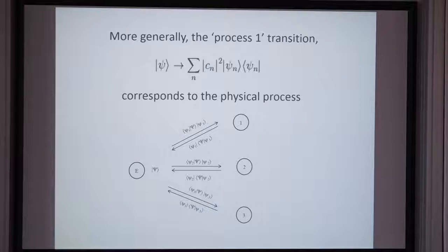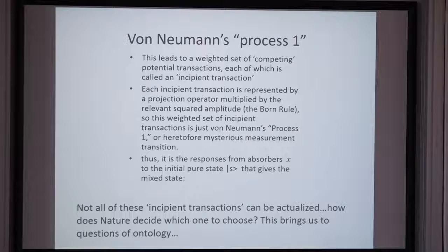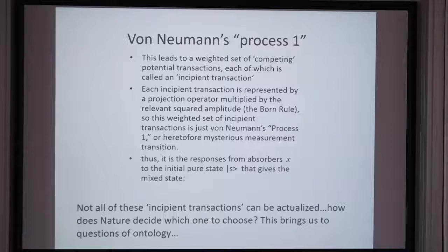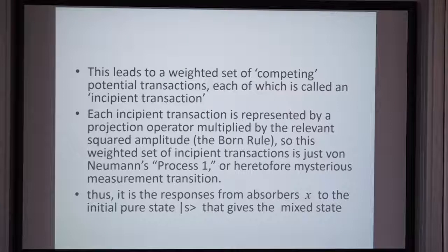One of these outcomes is actualized, and at that point the real quantum of energy will go from the emitter to whichever absorbing system wins that lottery and actualizes that quantum. To summarize: process one leads to a weighted set of competing incipient transactions, each represented physically by a projection operator multiplied by the Born rule — giving us a nice physical referent for the measurement transition. That's how we get process one, through the responses of absorbers, combined with this spontaneous symmetry breaking.